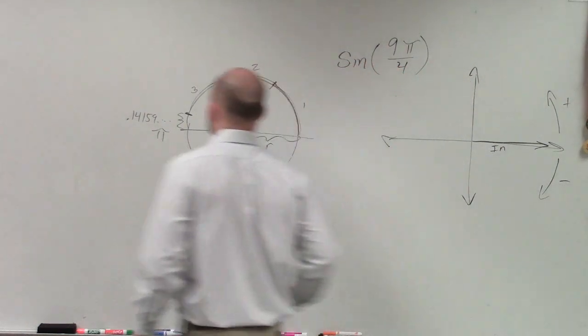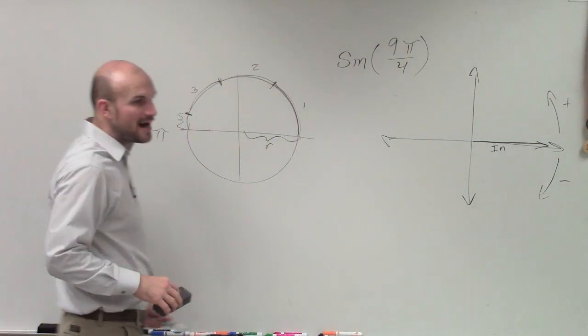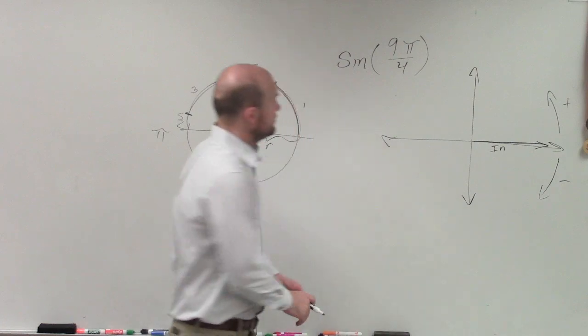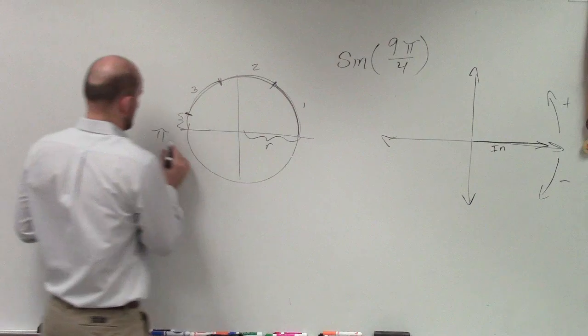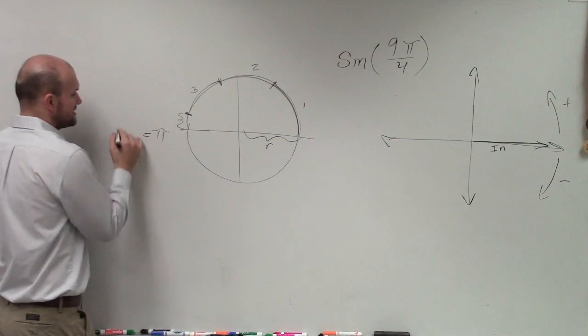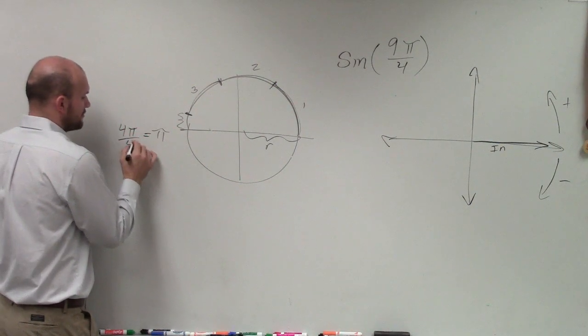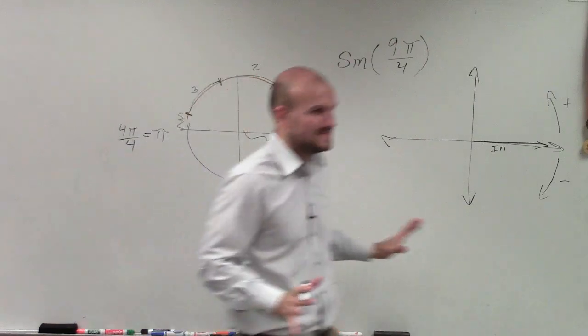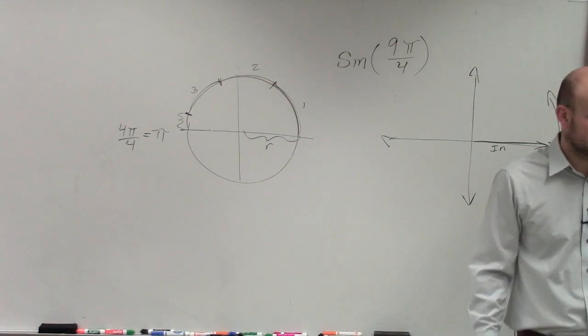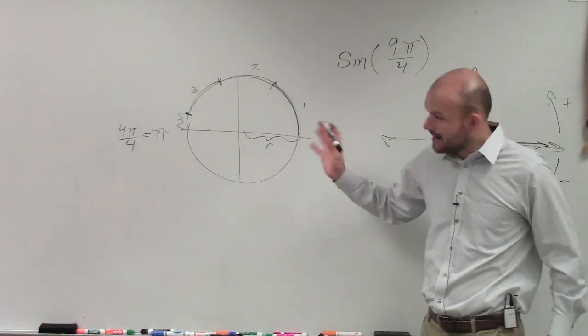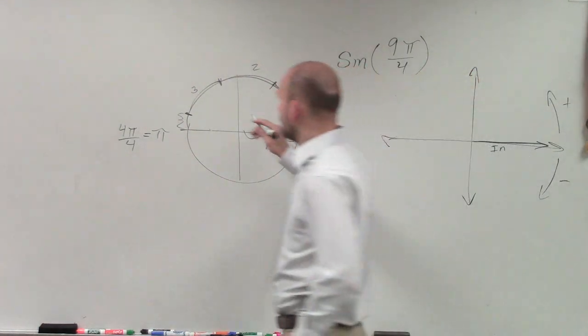If we're looking at 9π over 4, well 9π over 4 is greater than 1. When I look at my denominator, if I say π, I know that's the same thing as 4π over 4. So now I can break up my quadrant.